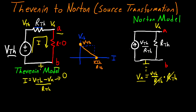The Norton model is used in the same exact way as the Thevenin model. Instead of representing the circuit with a voltage source and an equivalent series resistance, you can represent the same circuit with a current source and a parallel equivalent resistance. You can move between these models pretty easily because this resistance is the same in both, and the current in the Norton model is just the Thevenin voltage divided by that resistor. So once you find the Thevenin model, it's very easy to convert to the Norton model.